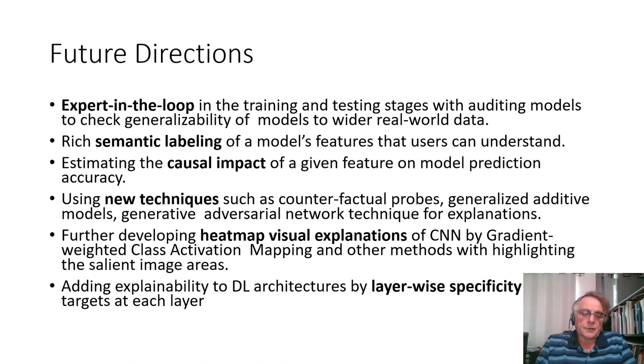Several future other directions include the expert in the loop, rich semantic labeling of model features that users can understand. Estimating causal impact of a given feature on model prediction. Using new techniques such as counterfactual probes, generalized additive models, and others. Further development, heat map visualization of CNN by gradient weighted class activation, mapping, and other methods with highlighted salient image areas. Adding explainability for deep learning architecture by layer by layer specificity. So I can continue with all these future directions, but it's really exciting area to see how many new studies need to be conducted. And visual methods naturally find the room for further development.